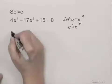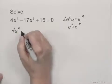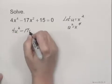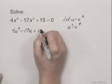So when I substitute, I would have 4u squared minus 17u plus 15 equals 0.